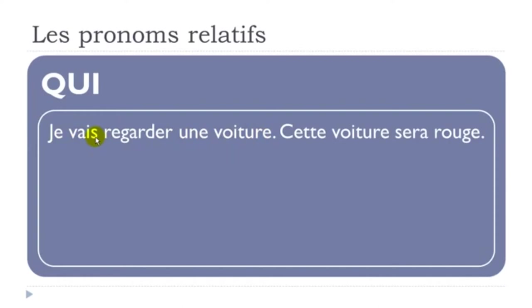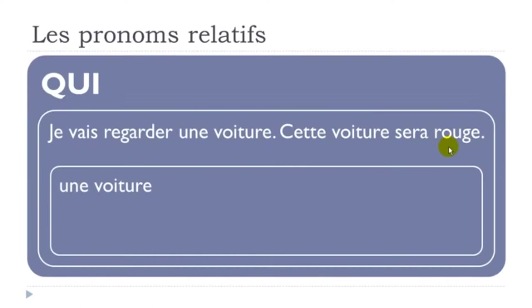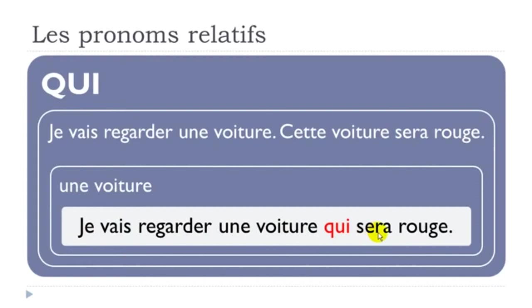With futur proche and futur simple: 'Je vais regarder une voiture. Cette voiture sera rouge.' → 'Je vais regarder une voiture qui sera rouge.' Remember: spot the word you want to replace, and if it is the subject of the verb, use 'qui' — whether it's a person or a thing — and place it before the verb.